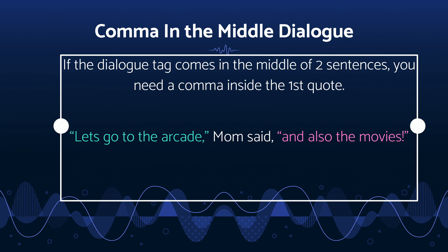The last place you can add a dialogue tag would be in the middle of two sentences. This example shows a split sentence being said by a character — the mom in this case — with the dialogue tag in between them. In this case, we would add the comma after the first sentence spoken, but still inside the quotation mark. The last sentence would have proper punctuation, like an exclamation mark, a period, or a question mark. Notice that you would also put a comma after 'said' at the end of the dialogue tag.